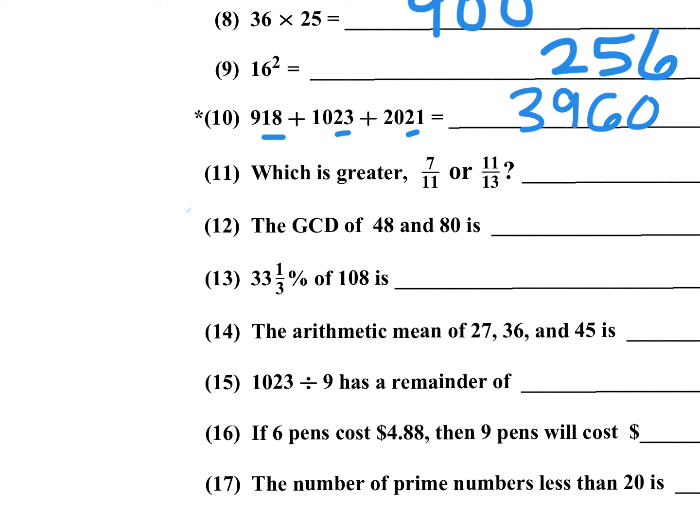For number 11, which is greater? 7 over 11 or 11 over 13? If I cross multiply 11 times 11, that's 121, and 13 times 7, that would be 91. So 121 is larger. 11 over 13 is the largest fraction.